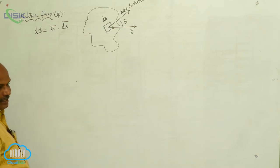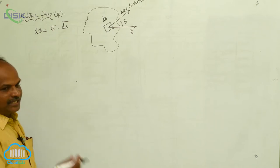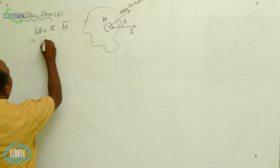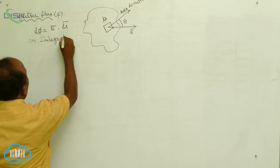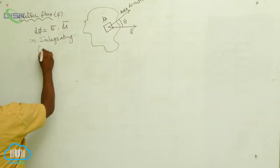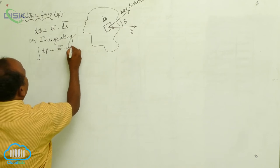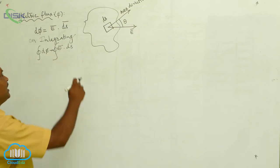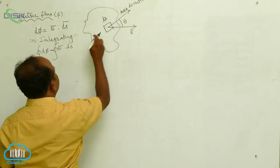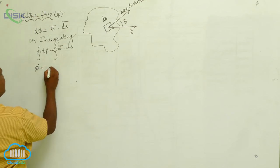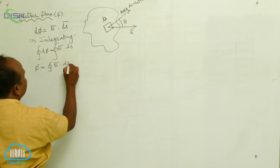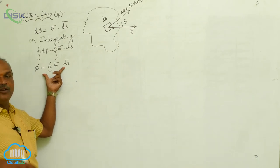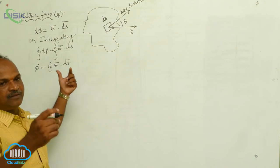Now, to get the total flux, the total flux can be obtained by integrating the above equation. Therefore, on integrating both sides, the integration of d phi equals the closed integral of E dot dS. This integration takes place over a closed surface. Therefore, phi equals the closed integral of E bar dot dS bar. This equation is valid for any closed surface.